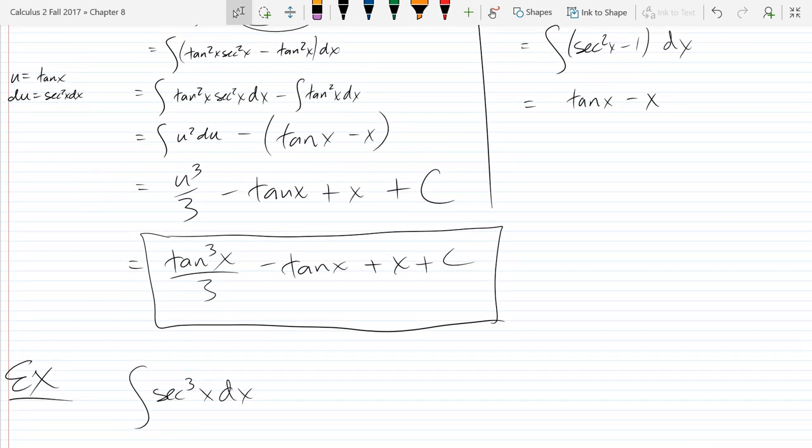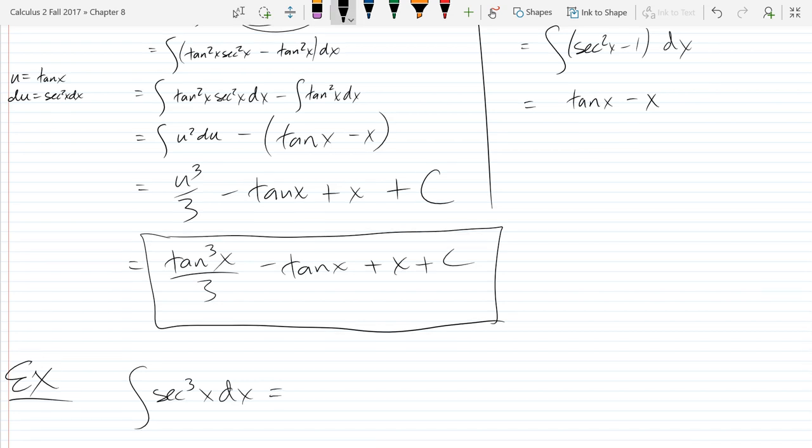So we're going to look at the antiderivative secant cubed x dx. What are some ideas for this? Put it as secant squared x times secant x. Yep, so we could break off basically kind of use the idea that we had at the beginning when there was odd power, so you're going to separate out the even ones with one left over.